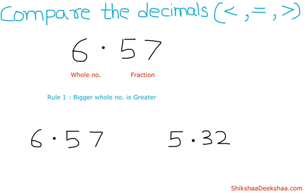So to compare decimals, rule number one is: compare their whole numbers. The bigger the whole number, the greater the value.